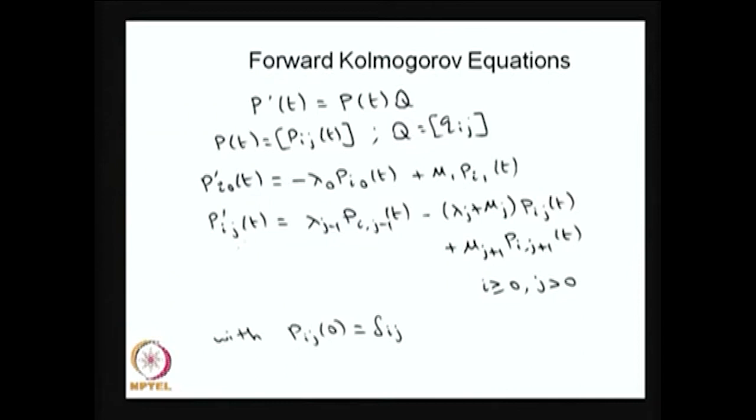If you solve this equation with the initial condition — the Kronecker delta of i,j — you will have the solution p(i,j) of t.